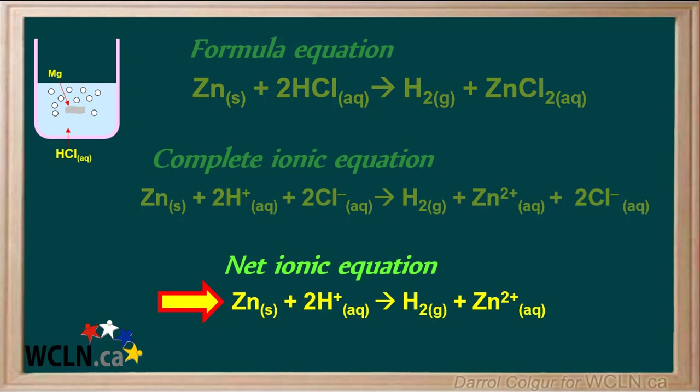When we are dealing with reaction rates, the net ionic equation is the most useful form of the equation because it shows only the species that react and the products they form.